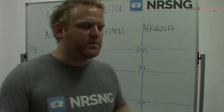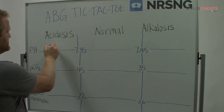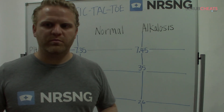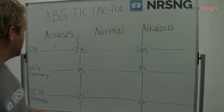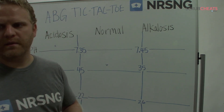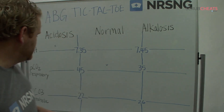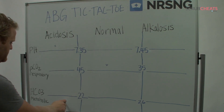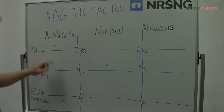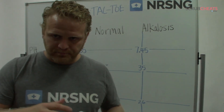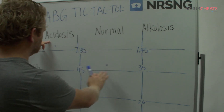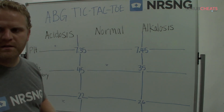Let's see what it looks like with some examples. If your pH is 7.28, we put an X on the left side of the box, to the left of 7.35, making it acidic. If the PCO2 is 37, it falls between 35 and 45, so we put an X right there in the normal column. If your bicarb is 18, it falls below 22, so we mark it on the acidic side. We can see that the bicarb matches the pH — so we have metabolic acidosis with no compensation, since our CO2 is normal.